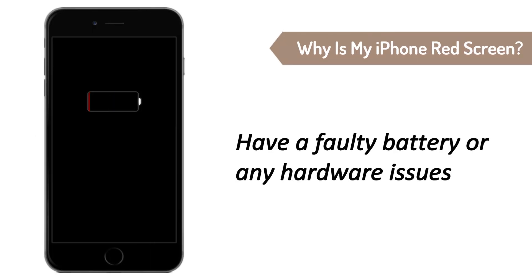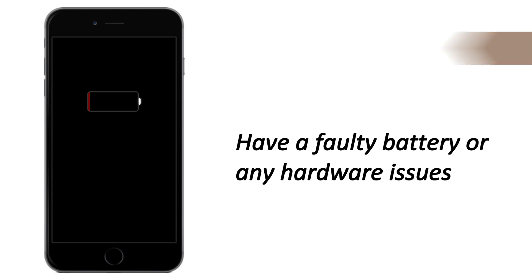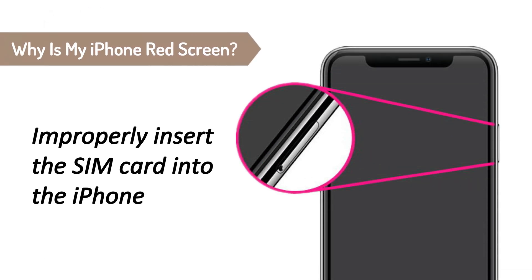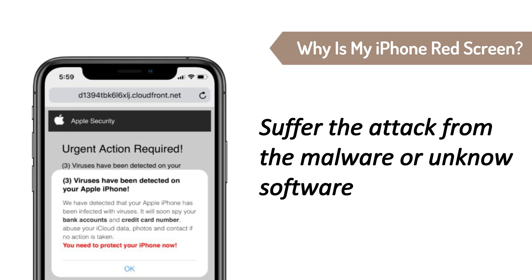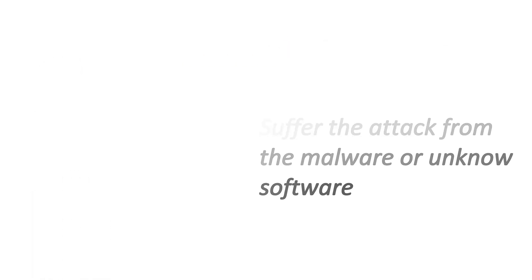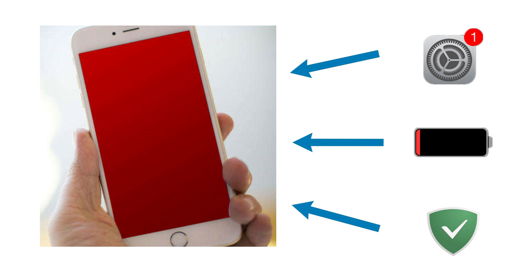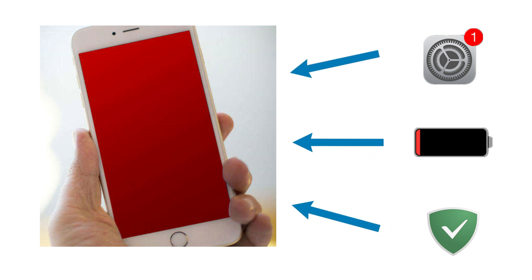When your iPhone has a faulty battery or any hardware issues, it would cause a red iPhone screen. If the SIM card is not inserted into the iPhone properly, then there appears a red light on your iPhone. The iPhone red screen of death can also be caused by an attack from malware. After we figure out the reasons, let's solve this issue with the following methods.